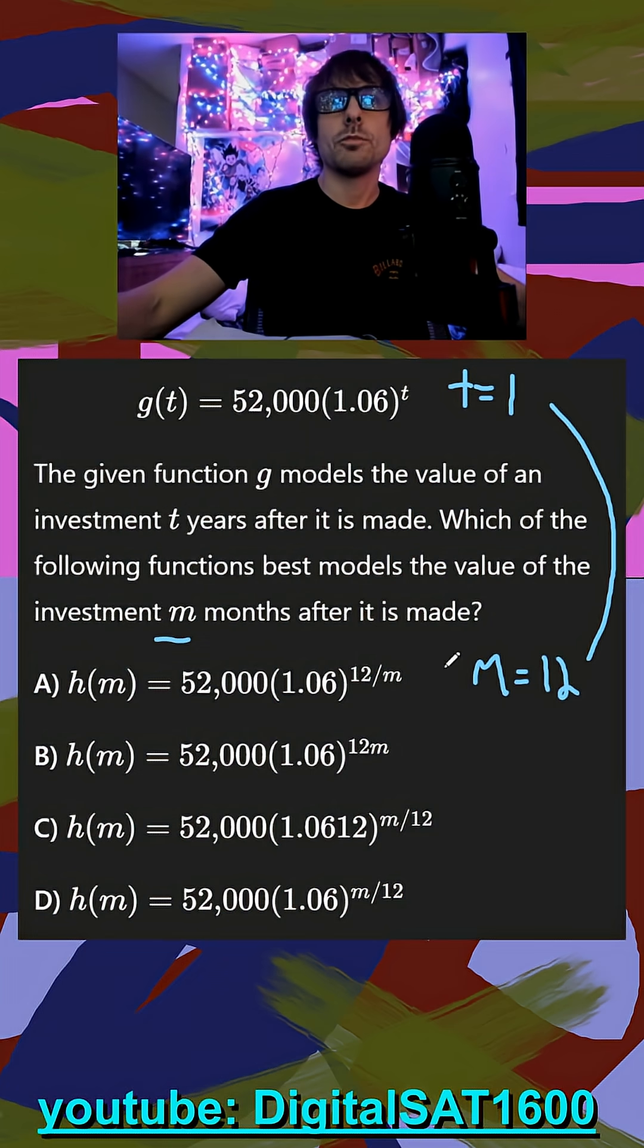So looking down below, when I plug in 12 for this m, I get 12 divided by 12, which is 1. This increases by 6%, so this is right so far.